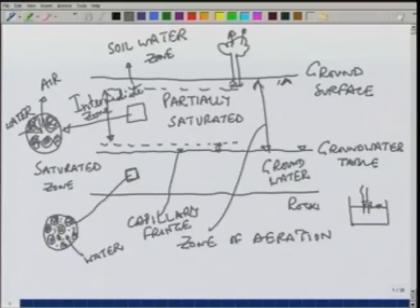If we look at the zone between the soil water zone and capillary fringe, we can call it an intermediate zone. So water is distributed below as: soil moisture, then intermediate zone, below that the capillary fringe, and below that the saturated zone — which is the zone we are interested in, because it will store and contribute water when we want to use it.